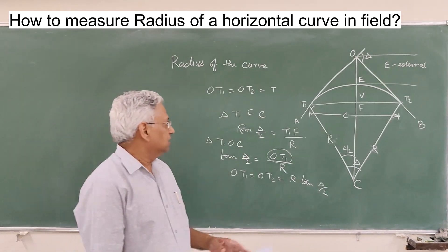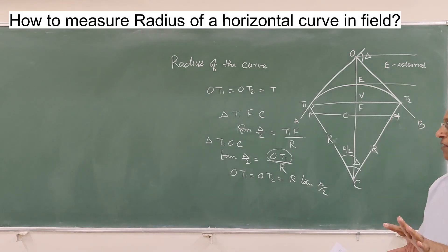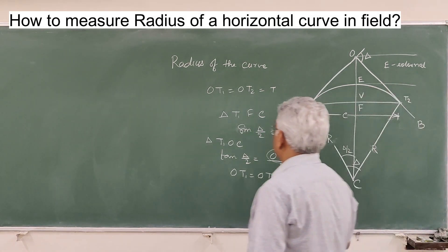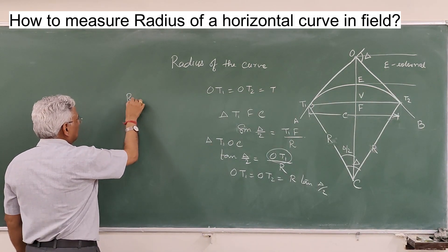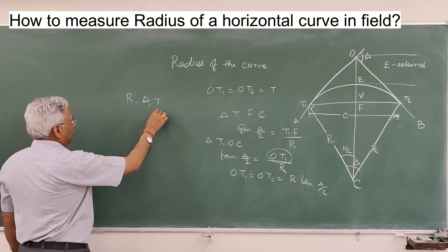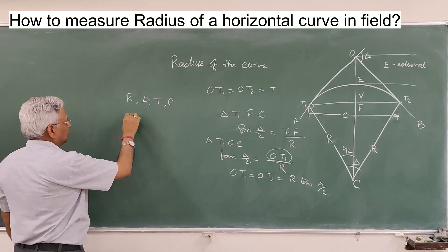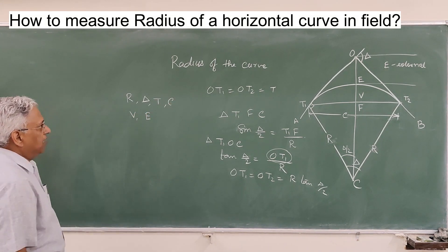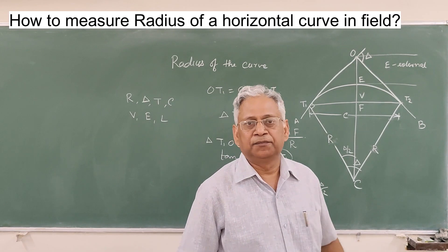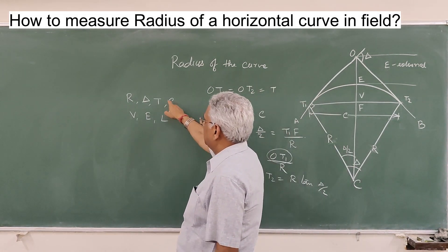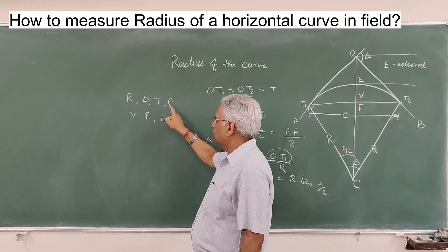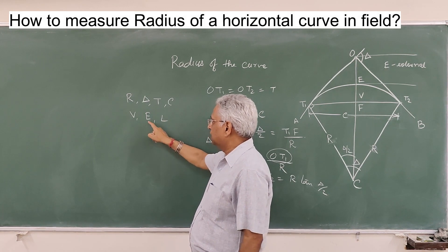There are 5 governing equations and 7 elements of a circular curve. These are: the radius of the curve, deflection angle of the curve, tangent length T, chord length, versine, external distance E, and length of the curve. These are the 7 elements of a horizontal curve.